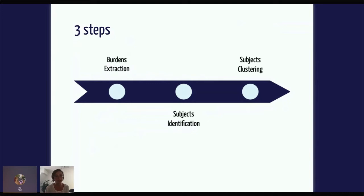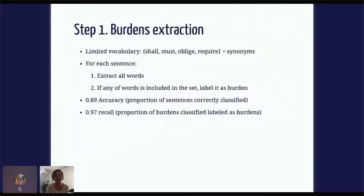The analysis articulates into three steps. I'll try to give an overview of the challenges and solutions at each step. Step one is burden extraction — finding the sentences in the text that define rules. In this case, having a limited vocabulary actually works in our favor. We can come up with a set of verbs that are very likely to point us at the definition of a burden. For each sentence, if any of these verbs appear in the text, we label that sentence as a burden. It's a pretty coarse classification rule, but we don't have a label set. Even so, we get 0.89 accuracy — 89% of sentences correctly classified — and 0.97 recall, which is the proportion of burdens correctly classified as burdens.